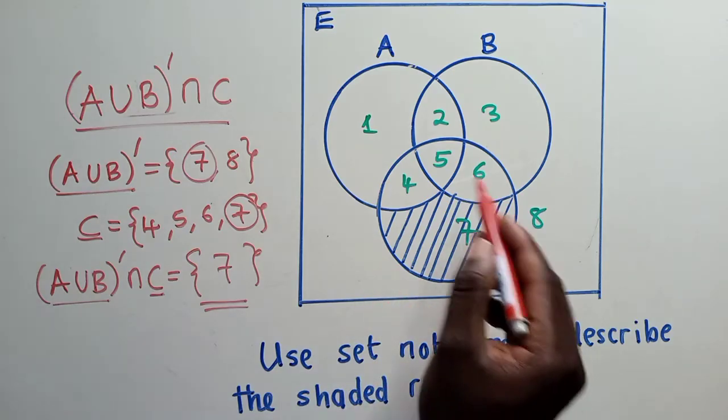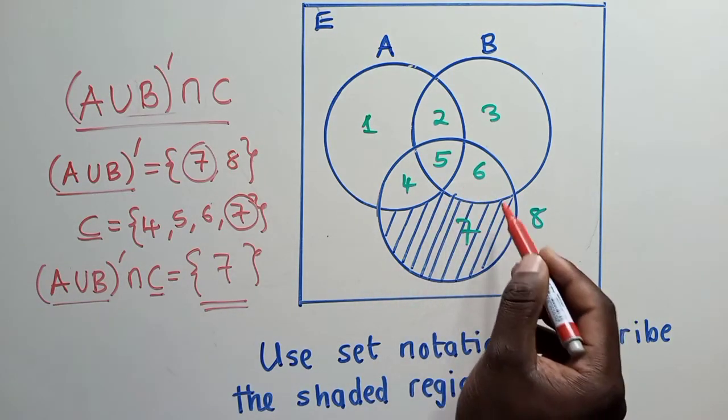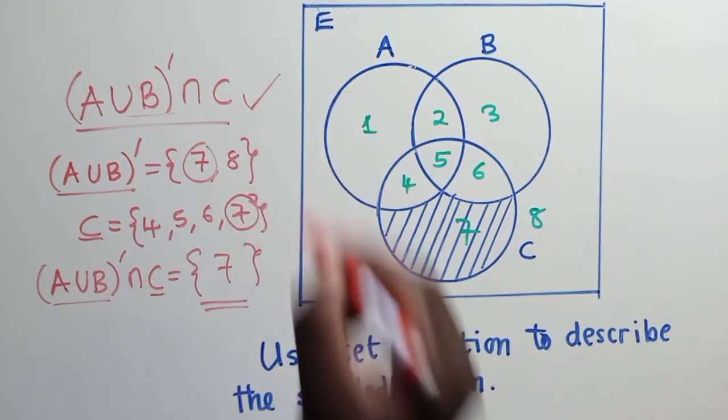Now let's go where is 7 found in this diagram. It's right here where we've shaded it. So the solution is okay, A union B complement intersect C is our solution.